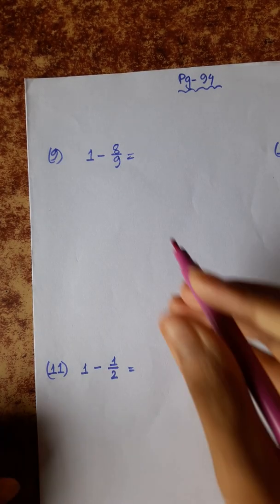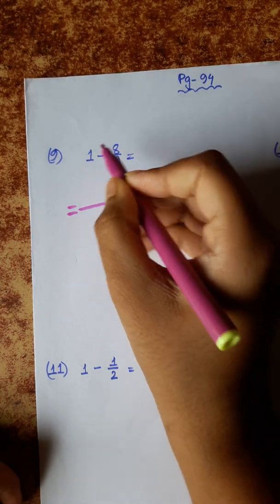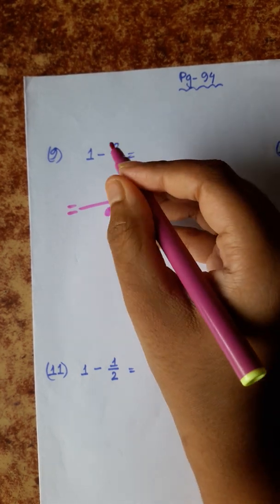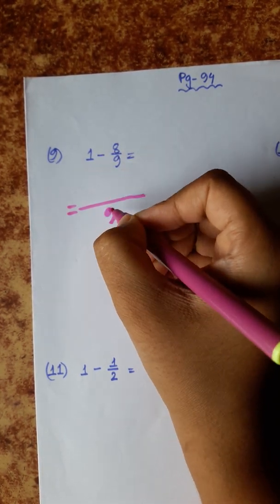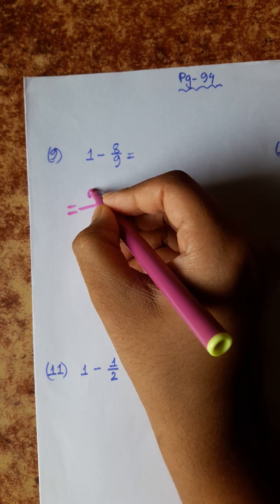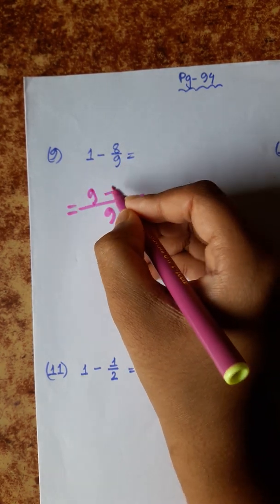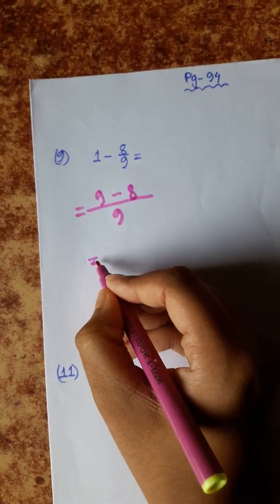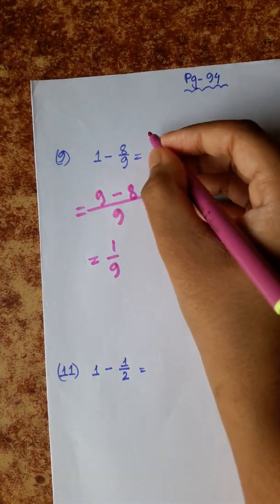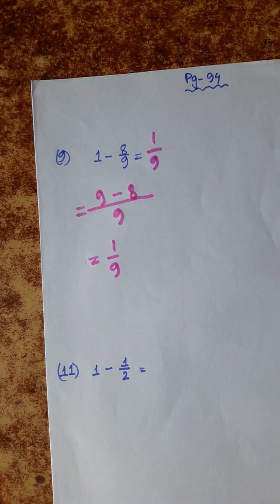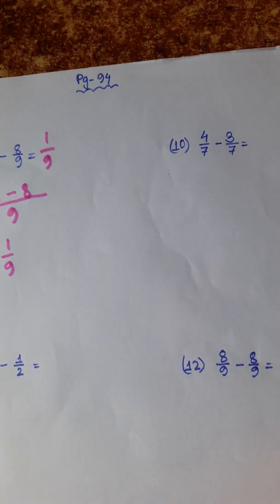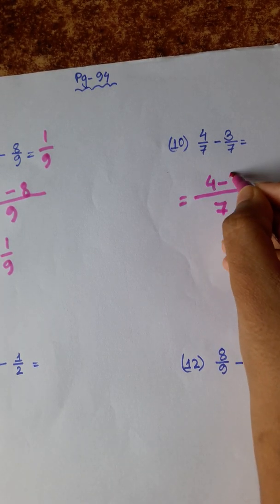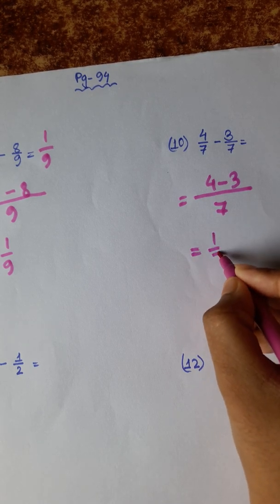Number 9 continued: 1 minus 8 by 9. Using LCM 9 — 9 into 1 is 9, 8 into 1 is 8. So 1 by 9. Then number 10: 4 by 7 minus 3 by 7 — 4 minus 3 is 1, so 1 by 7.